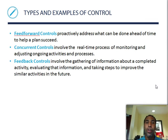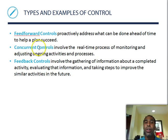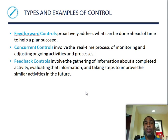Feed-forward control proactively addresses what can be done ahead of time to help a plan succeed — you want to be proactive in your planning. Concurrent controls involve the real-time process of monitoring and adjusting ongoing activities; the keyword is concurrent, meaning it goes alongside the process while making adjustments on the fly. Feedback controls involve gathering information about a completed activity, evaluating it, and taking steps to improve similar activities in the future.